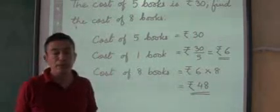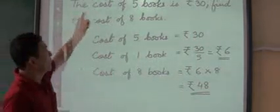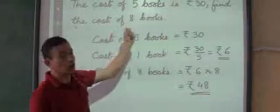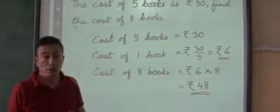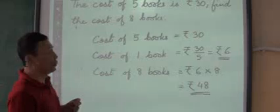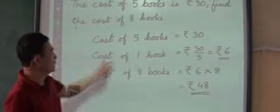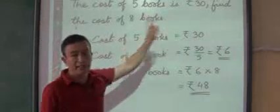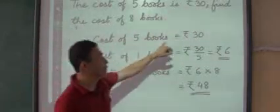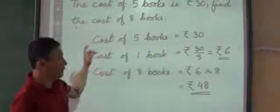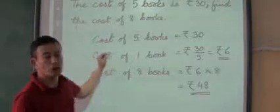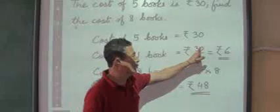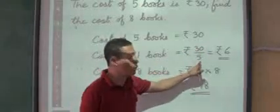Let's take an example straight away. The cost of 5 books is rupees 30; find the cost of 8 books. So what we were doing in the previous classes was finding out firstly the cost of 5 books, which is already given in the question — cost of 5 books is rupees 30. Then we are finding out the cost of 1 book.